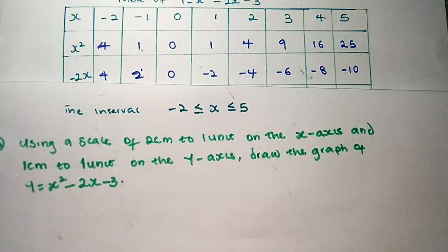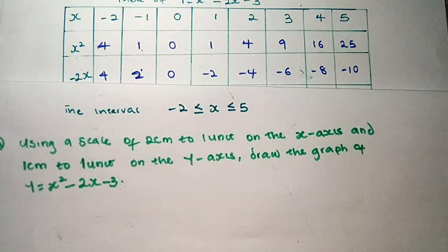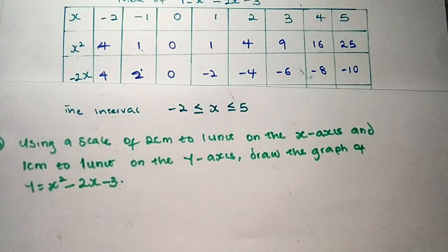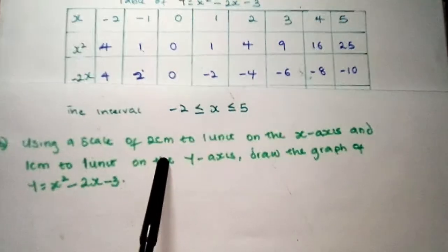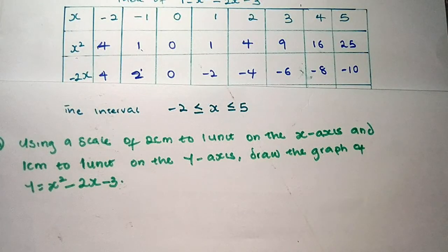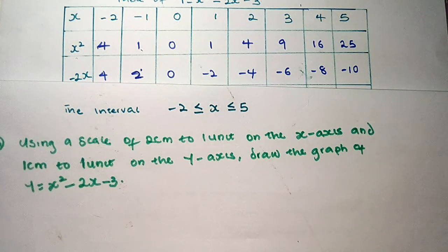I'm assuming you already know that the x-axis is horizontal and the y-axis is vertical on the graph. What we want to talk about in this video is scales. What do you understand by using a scale of 2 centimeters to 1 unit on the x-axis? We'll be explaining 2 centimeters to 1 unit and the difference between that and 1 centimeter to 1 unit. That's what we'll be doing in this video.